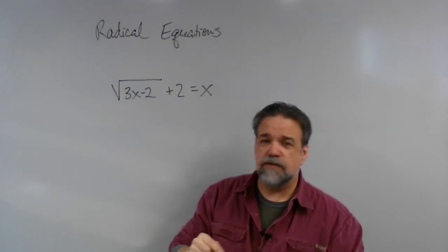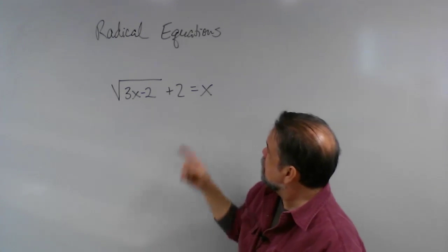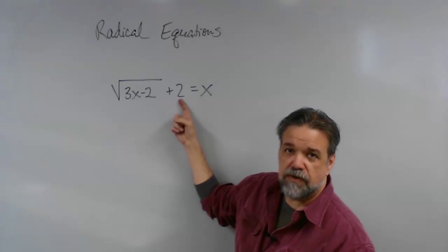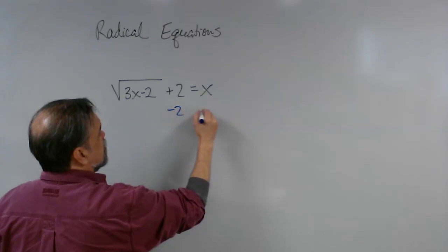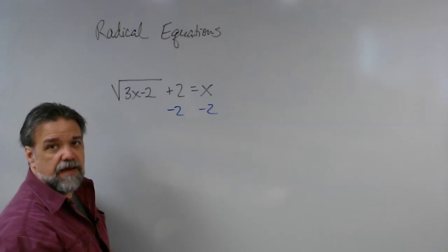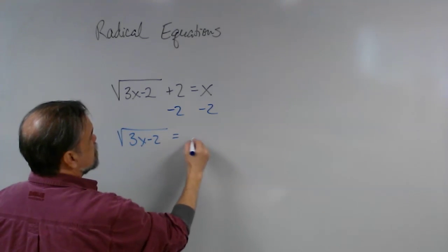Isolate the radical. That is, get this radical by itself. There's a real easy way to do that. There's a plus two right there, let's just do the inverse operation, let's subtract two. So I'm going to subtract two here and two there.